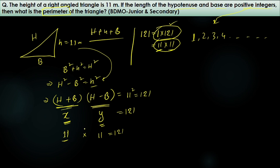The problem with 11 × 11 is: if (H + b) = 11 and (H − b) = 11, that's only possible when b = 0. But if the base is zero, it's no longer a triangle. So we cannot use 11 × 11. Therefore, we take the factor pair 1 × 121.